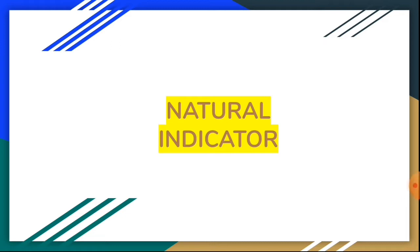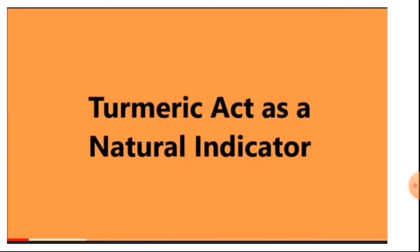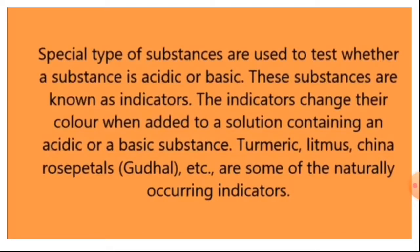Hi students, as we completed our first natural indicator litmus in our last video session, today we are going to discuss our second natural indicator: turmeric. Special types of substances are used to test whether a substance is acidic or basic, and these substances are known as indicators. Indicators change their color when added to a solution containing an acidic or basic substance. Turmeric, litmus, china rose petal, and good hull are some naturally occurring indicators.